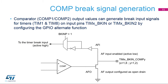Comparator output values can generate brake input signals for the timers on input pins using GPIO alternate function selections, incorporating the I/O open-drain connection. The purpose of the brake function is to protect power switches driven by PWM signals generated by timers. The two brake inputs are usually connected to fault outputs of power stages and three-phase inverters. When activated, the brake circuitry shuts down the PWM outputs and forces them to a predefined safe state.